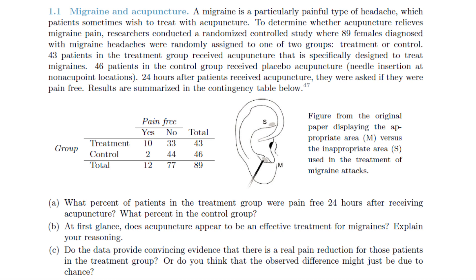43 patients were in the treatment group and they received acupuncture specifically designed to treat migraines. The other 46 patients were in the control group and they received placebo acupuncture — basically a needle inserted at a non-acupoint location. 24 hours after patients received acupuncture, they were asked if they were pain-free. The results are summarized in a contingency table, and based on that we're going to answer three questions.